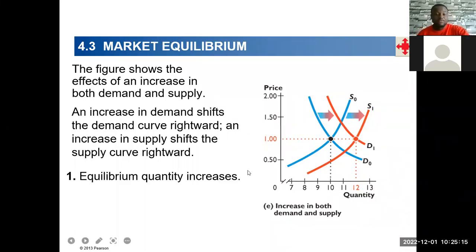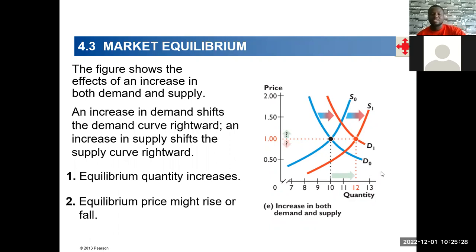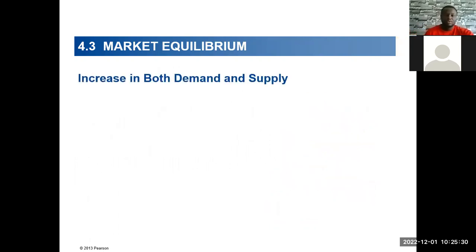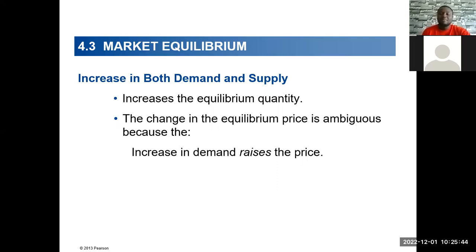As I was saying, for a simultaneous increase in both demand and supply, equilibrium quantity will increase, but equilibrium price might rise, fall, or even remain the same — so that effect is ambiguous. There will be an increase in equilibrium quantity, but the change in equilibrium price is ambiguous. Why is it ambiguous? Because an increase in demand will raise price.